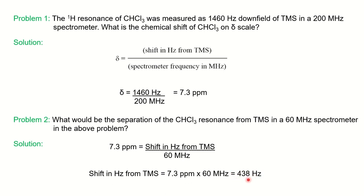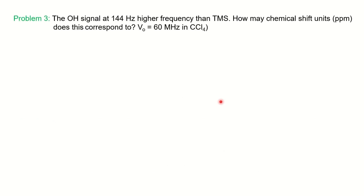The separation is 438 Hz at 60 MHz, compared to 1460 Hz at 200 MHz. As you decrease the frequency from 200 to 60 MHz, the shift from TMS also decreases. This is why we prefer higher frequency instruments — they provide wider separation between signals, making it easier to observe coupling between signals compared to low-frequency instruments. The chemical shift value itself remains the same at 7.3 ppm.